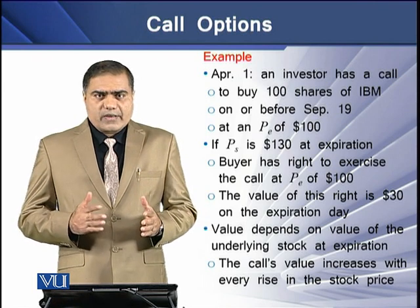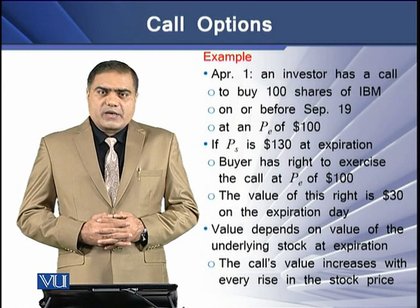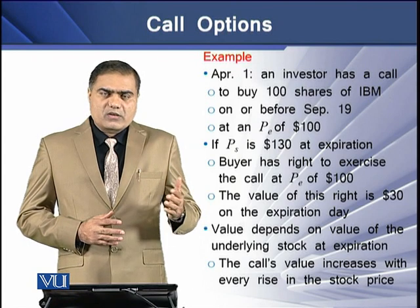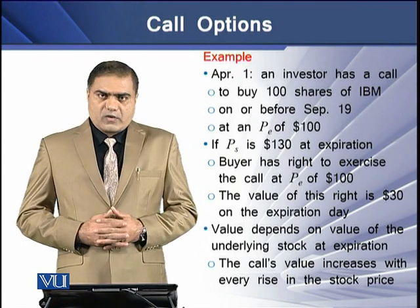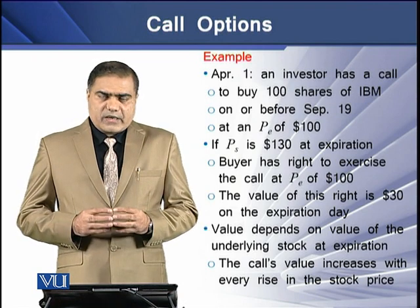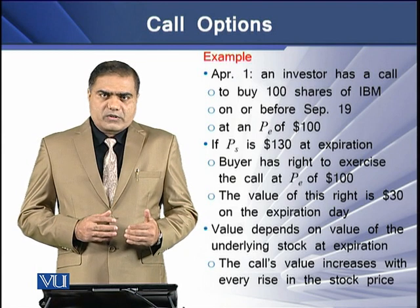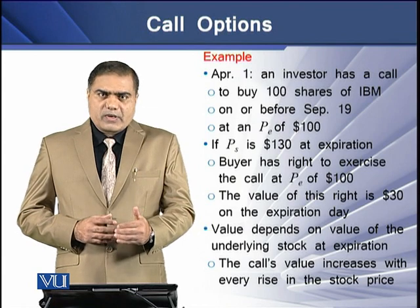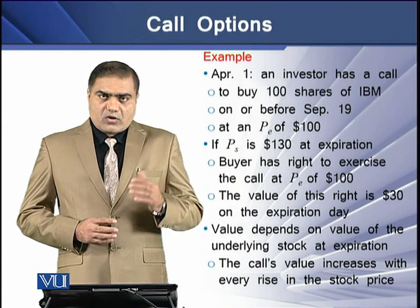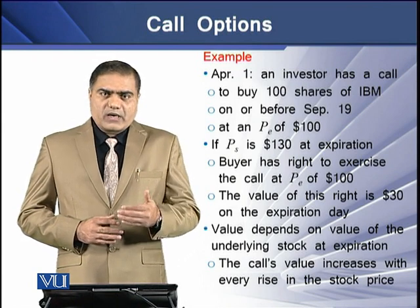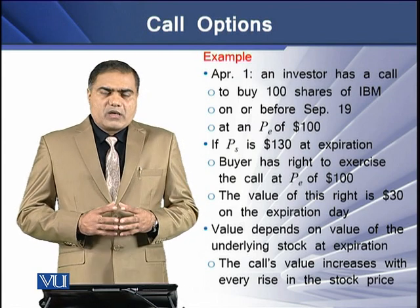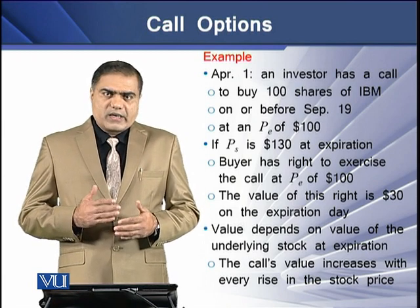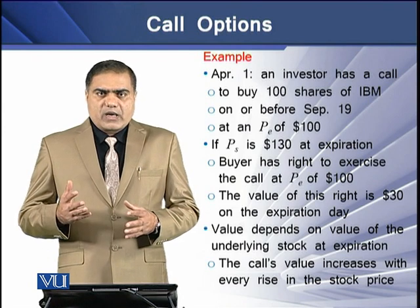Now if the stock price on that particular date, September 19, is $130 per share, then the buyer has a right to exercise this call at an exercise price of $100. This means that the value of this right given to the buyer under the call option is worth $30 per share on the date of expiry. The value of the call depends on the value of the underlying asset, and in our example the value of our call will be rising as there is a rise in the stock price of IBM.